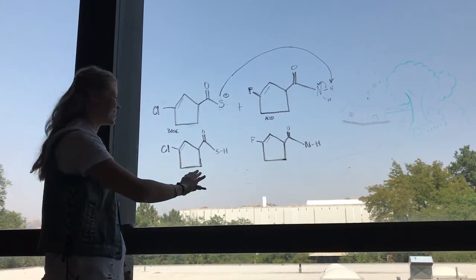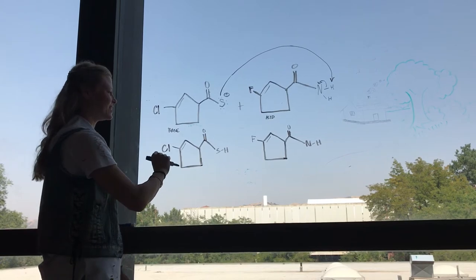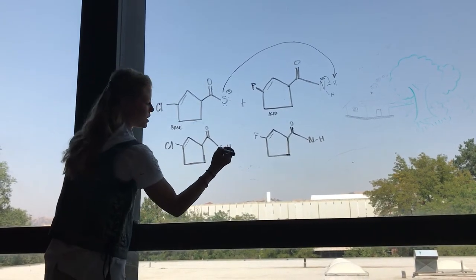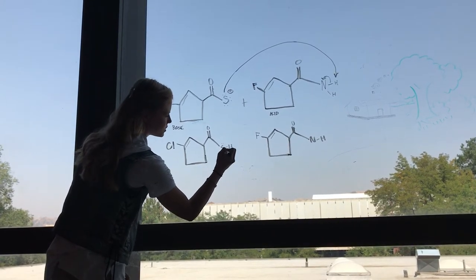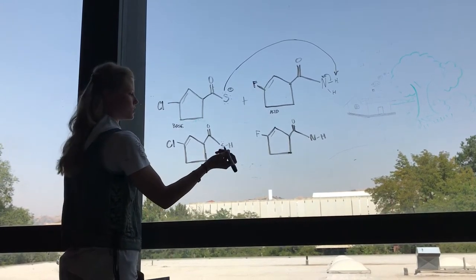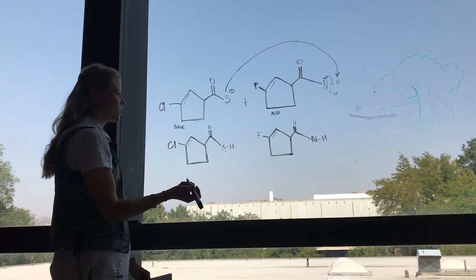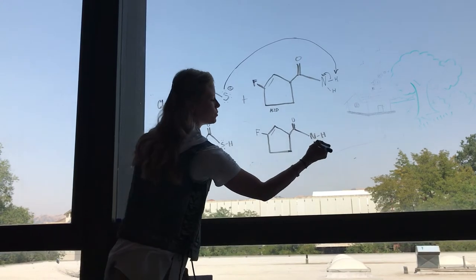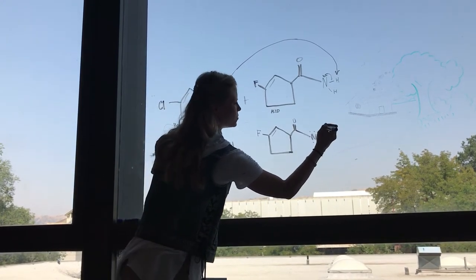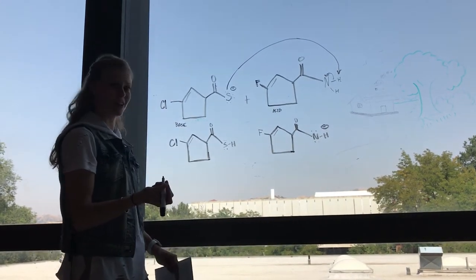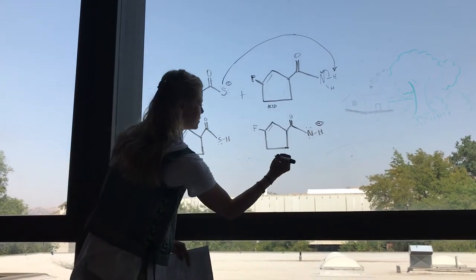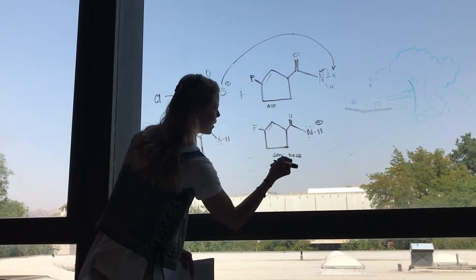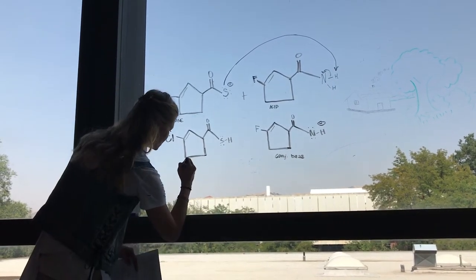I've already drawn the conjugate acid and the conjugate base. The proton is attached over to sulfur, which now has two lone pairs and a hydrogen, so it has a neutral charge. Over here, nitrogen only has one hydrogen bond now, so it has two lone pairs, which creates a negative formal charge — so this is going to be our conjugate base, and on the left it's going to be our conjugate acid.